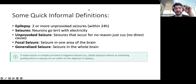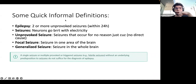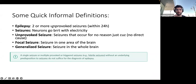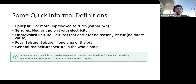First, I want to start off with some simple definitions. Epilepsy is defined as two or more unprovoked seizures within 24 hours. An unprovoked seizure is a seizure that just happens with no reason, no cause. If it occurs without a specific identifiable cause — like a stroke or lack of sleep — then we would call it an unprovoked seizure.